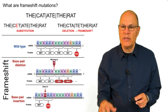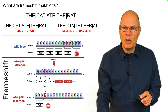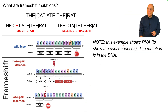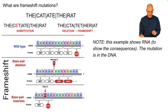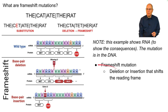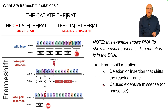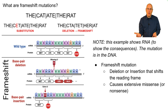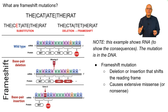Here is a series of codons that code for four amino acids and then a stop codon, shown as RNA to illustrate the consequences. The mutation would have been in the DNA. A frameshift mutation — a deletion or insertion — changes the reading frame and causes extensive missense or nonsense. Deleting a U causes two amino acids to be wrong. Or a stop codon can be inserted, and then the entire protein doesn't get coded for after the first amino acid.